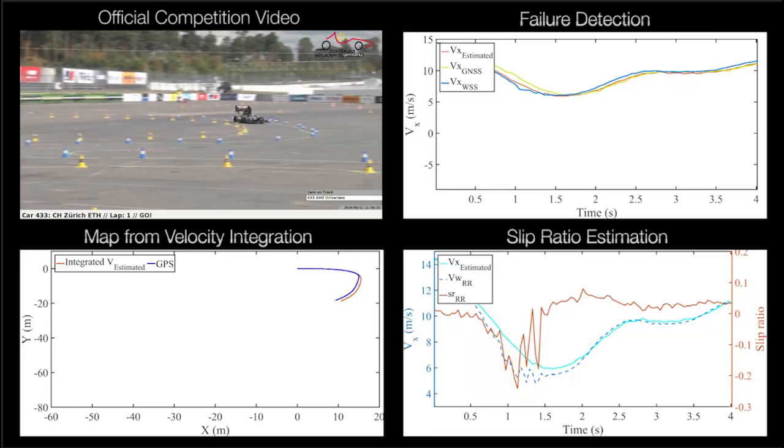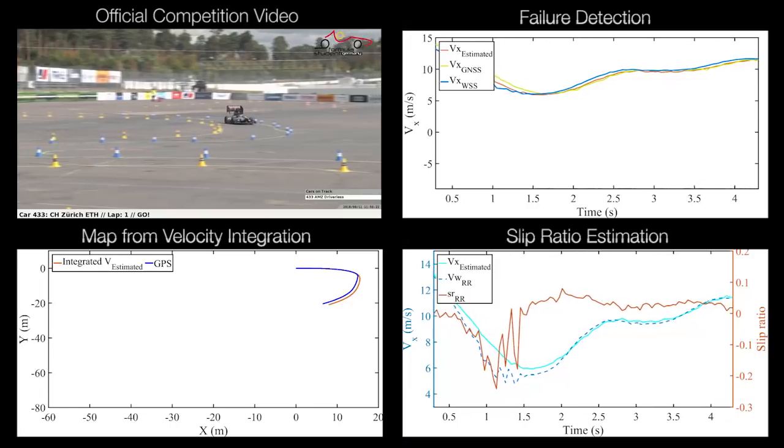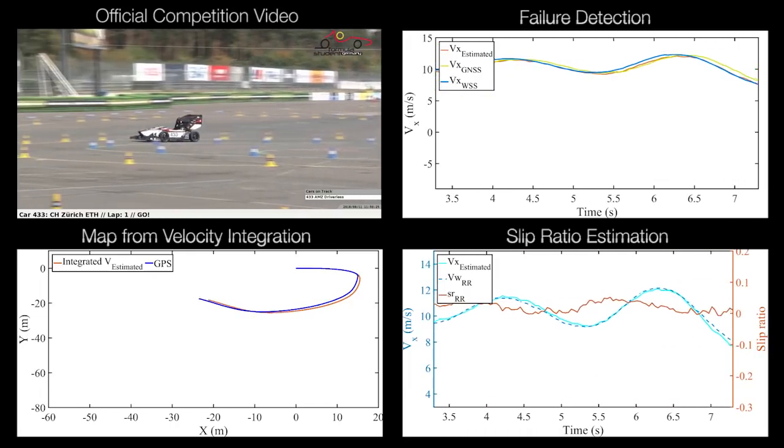The top right graph depicts the GPS velocity in yellow. The bottom right shows the slip ratio estimation in red.